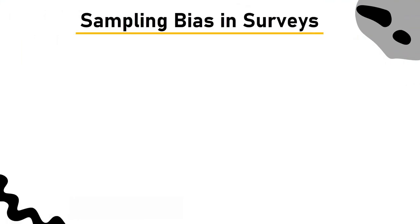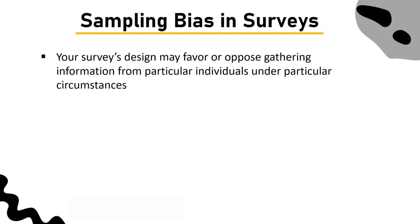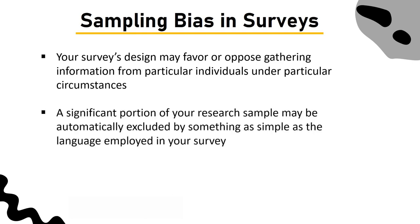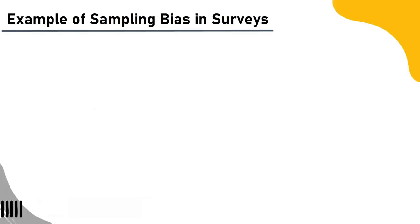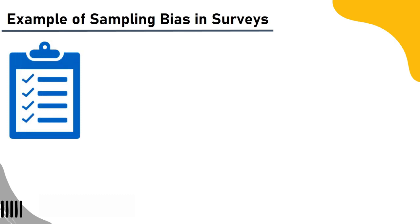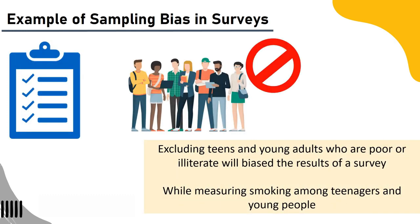Sampling bias and surveys: The types of questions you include and your survey design both have the potential to introduce sampling bias. Your survey's design may favor or oppose gathering information from particular populations. Something as simple as the language used in your survey can automatically exclude a significant portion of your research sample. Make your survey simple to interpret if you want people with low or no literacy to complete it. Example: Excluding teens and young adults who are poor or illiterate will bias the results of a survey measuring smoking among teenagers and young people.